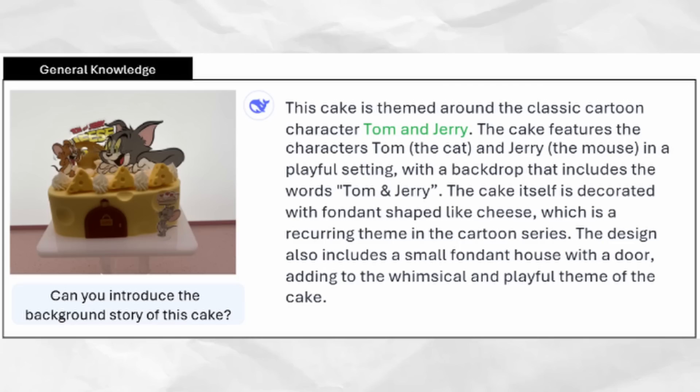Here's a funny example where you give it an image of a cake and ask it to describe the background story of that cake. So you give it an image and text, and Janus Pro outputs text describing the image — reasoning about what's inside and picking out the most important parts and features.